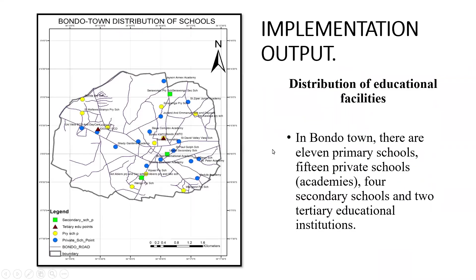On the implementation output — what I achieved from all those processes. First, the distribution of educational facilities. From the legend, you can see secondary schools in green, tertiary educational points shown as triangles, primary school points in yellow, and private school points in blue. When I converted the polygons, these are the points that I achieved.